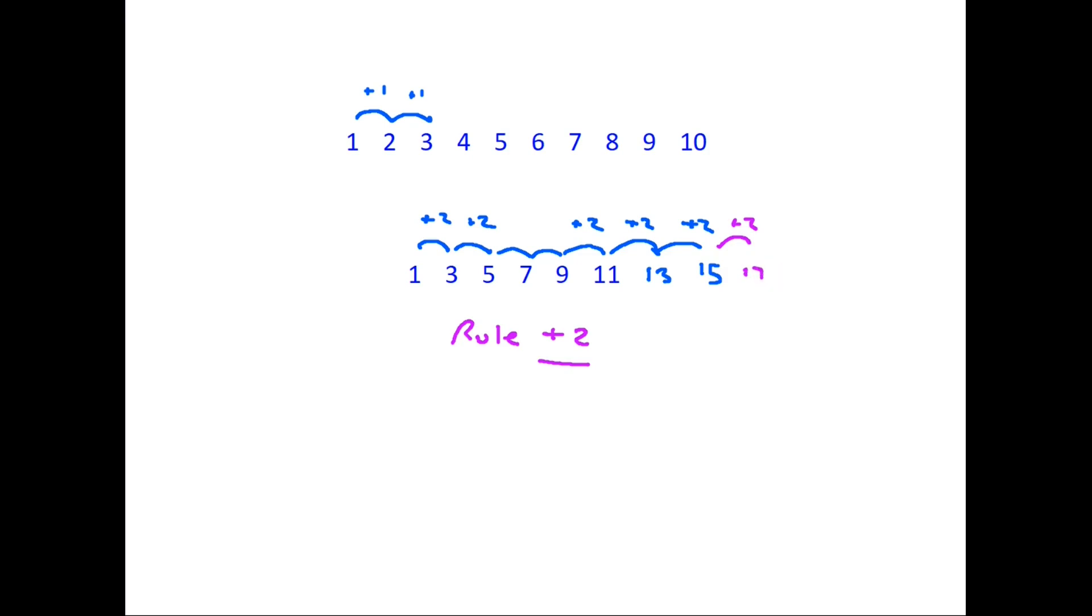Let's have a look at another sequence of numbers. Here we have 21, 17, 13, 9. Now again we are going to be asked to find the next two numbers in the sequence. So let's have a look what is happening each time we move from one number to the next. 21 going down this time and in fact to get from 21 to 17 we have to take away 4.